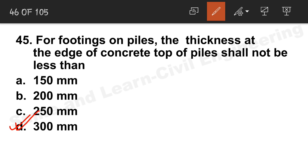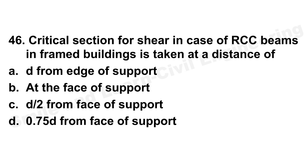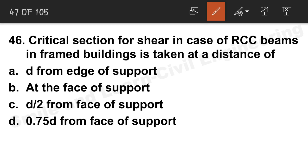Question 45: For footings on piles, the thickness of edge should be 300 mm. Option D is the correct answer. Question 46: The critical section for shear in RCC beams in framed buildings is taken at the face of support for one-way shear at distance d, and d/2 from the face for two-way shear. Option B is the correct answer.